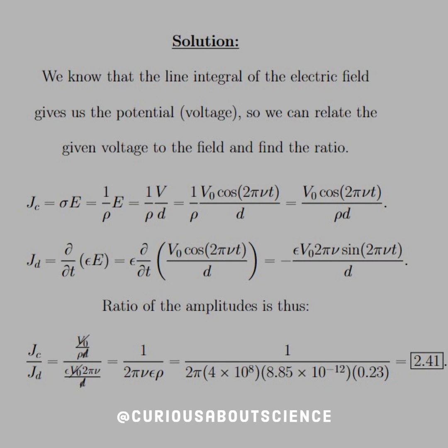So the conduction current Jc is equal to the conductivity, which we know is 1 over rho, times the electric field, which we found with respect to voltage, is V over D. So if we plug in the voltage we get this, simplifies down to the right-hand side.